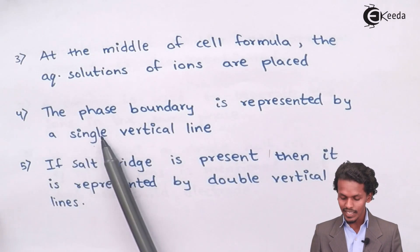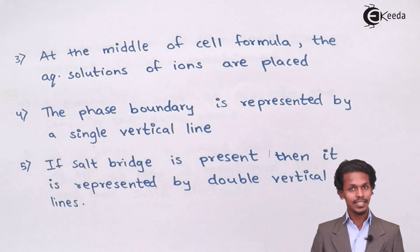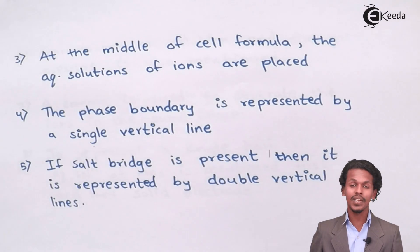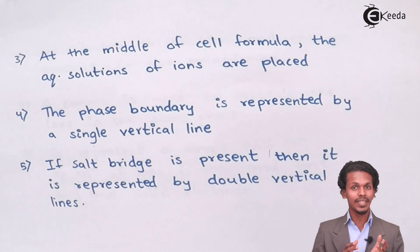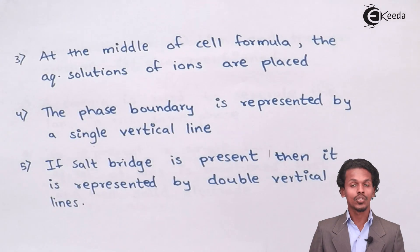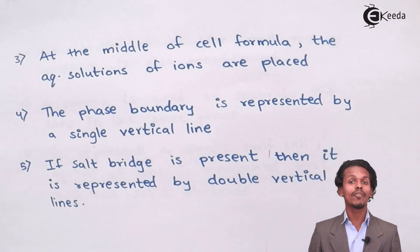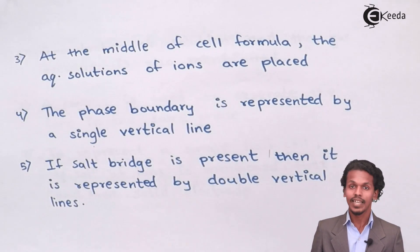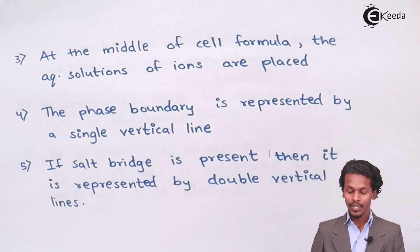The phase boundary is represented by a single vertical line. The anode and cathode are metals — solids — while the aqueous solution is in liquid state. Since these are of different states, they are of different phases. Therefore, we represent a single vertical line to indicate a difference in phase between, for example, the solid anode and the aqueous solution.